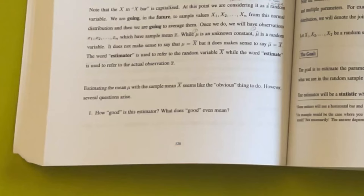I'll point out that this note on page 128 is another note I really like. It says: 'Note that X and X bar is capitalized, and at this point we are considering it as a random variable. We are going in the future to sample values of X1, X2, Xn from this normal distribution. Then we are going to average them. Once we do, we will have observations lowercase x1, lowercase x2, lowercase xn, which have sample mean x bar. While mu is an unknown constant, mu hat is a random variable. It does not make sense to say that mu equals capital X bar, but it does make sense to say mu hat equals capital X bar. The word estimator is used to refer to the random variable X bar, while the word estimate is used to refer to the actual observation lowercase x bar.'